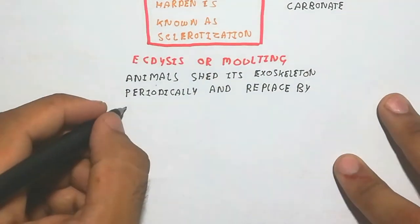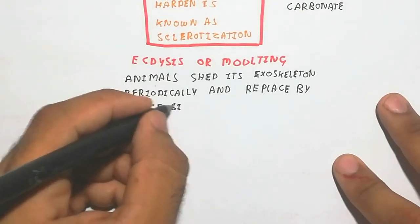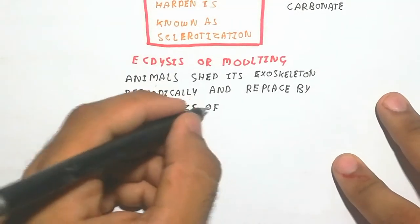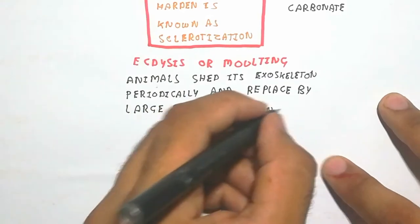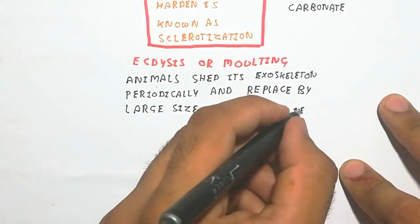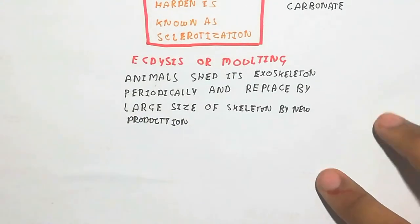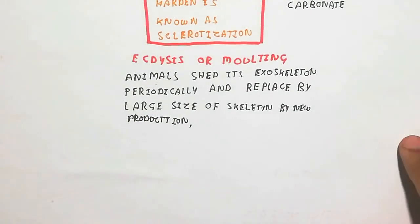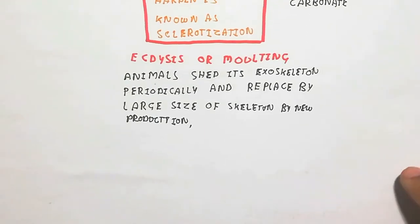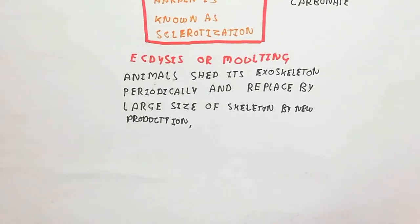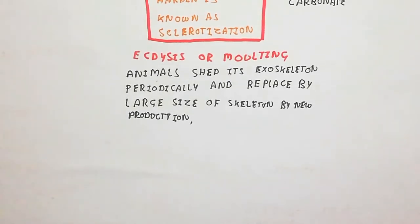During the ecdysis process, the old epicuticle and endocuticle are digested by production of enzymes. A gland secretes the enzyme. All of this is controlled by the nervous system.